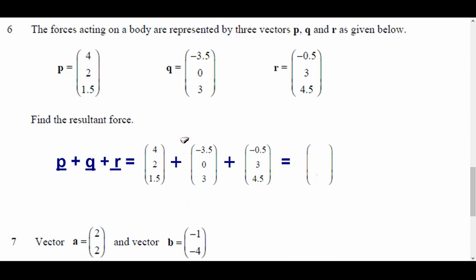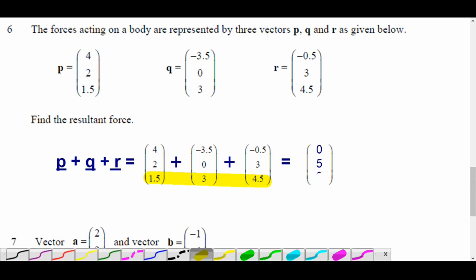OK, let's move on to number 6. The forces acting on the body are represented by three vectors, P, Q, and R. They're given there. Find the resultant, so kind of like question 4. The resultant's when you add them together. So we add them together, P, Q, and R. And basically what you do is add all the top numbers and kind of move down. So add all those up. So 4, add negative 3.5, add negative 0.5. You can do it in your calculator, but that's just 0. 2, add 0, add 3 is 5. And then adding on this last bit here, you're going to get 1.5 and 4.5. That's 9, and you're finished.